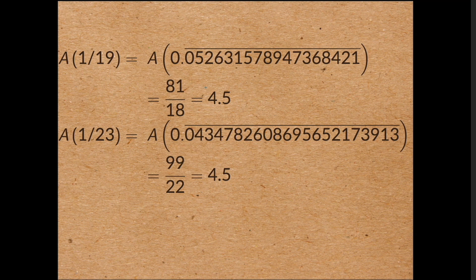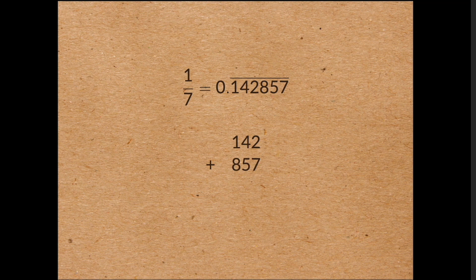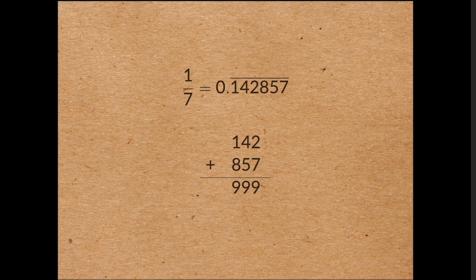Let's have a closer look at 1 on 7. The decimal expansion is 0.142857 recurring. Now if we break that up into two pieces, we get 142 and 857. And if we add these numbers together, we get 999. But that means if we pair the digits together, we get 1 plus 8 is 9, 4 plus 5 is 9, 2 plus 7 is 9. And so the average of all the digits is 4.5. And in fact, the same thing happens whenever the period is even.